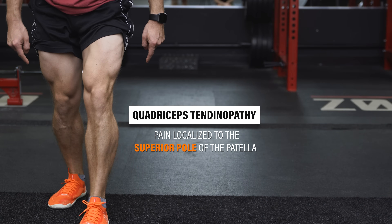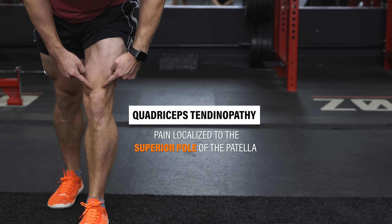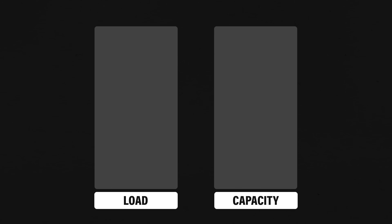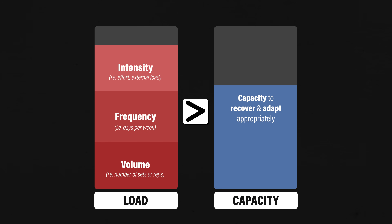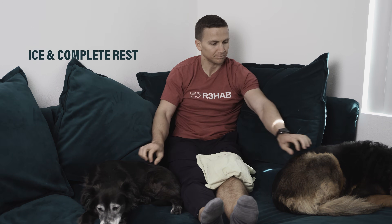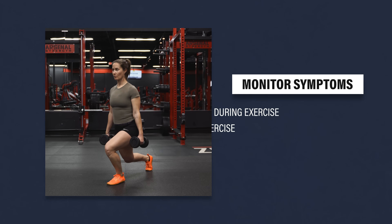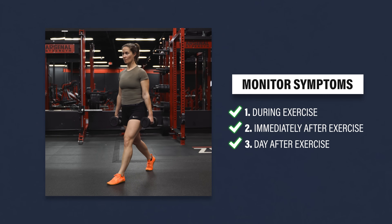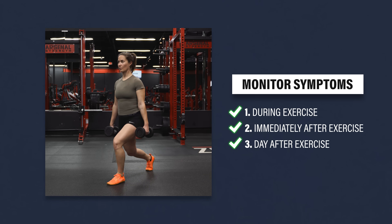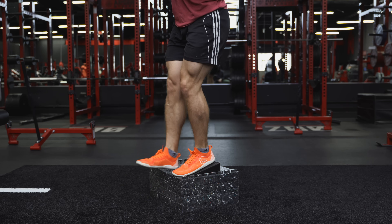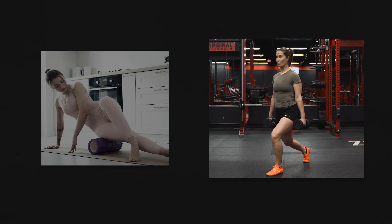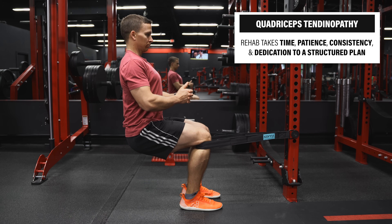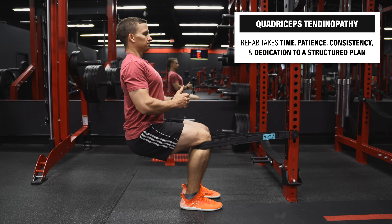In summary, quadriceps tendinopathy is characterized by localized pain at the superior pole of the patella that has a dose-dependent relationship with the magnitude and rate of loading. It is thought to occur when the intensity, frequency, and volume of quadriceps tendon loading exceeds your capacity to recover and adapt appropriately. Inflammation isn't the primary driver of the condition, so ice and complete rest aren't the cornerstones of rehab. Your first goal is to find a Goldilocks level of loading that keeps your symptoms tolerable during, immediately after, and the next day following activity. You'll then implement exercises for three or more months to improve your function and tolerance. Adjunct treatments that alleviate pain can be incorporated, but they're not the focus — especially if they're high cost or high risk. There is no quick fix; quadriceps tendinopathy takes time, patience, consistency, and dedication to a structured plan.